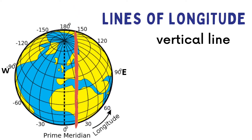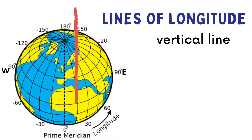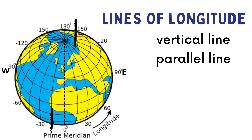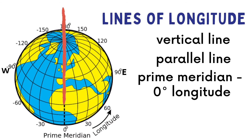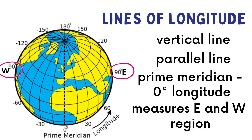Let us now proceed with the lines of longitude. Lines of longitude are vertical lines seen on a globe — the long lines go top to bottom. Just like latitude, they are also parallel and do not intersect. The primary meridian is zero degrees longitude, also called the first line of longitude. It measures distance in the east to west direction.